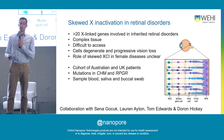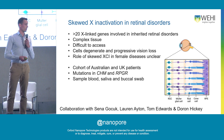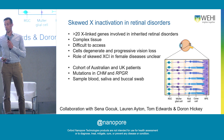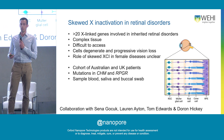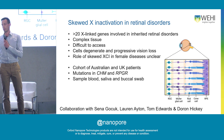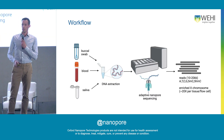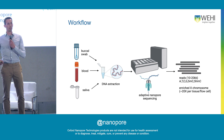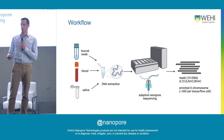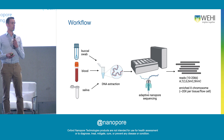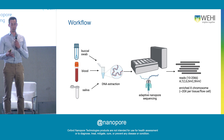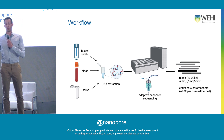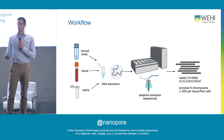The big problem is that we don't routinely have access to retinas, so instead we have to sample peripheral tissues. We look at blood, saliva, and buccal swab, and extrapolate to what might be happening in the retina. Our workflow is simple: we extract DNA, put it on the Promethion — we've got a P24 — and do adaptive sampling to enrich for X chromosome reads. We aim for 10 to 20 KB reads and about 20X coverage per tissue.